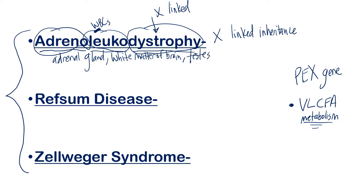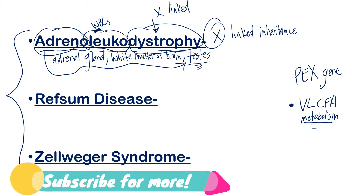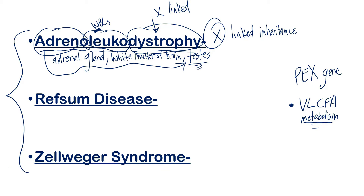You might wonder why the testes and not female reproductive organs. It's because we said this is X-linked, so it primarily presents in males, and so the buildup occurs in the testes. To remember that, think about how the adrenal cortex has three segments — glomerulosa, fasciculata, and reticularis — and sex hormones can come from the reticularis. That helps you remember we're dealing with sexual-type tissues, so testes.